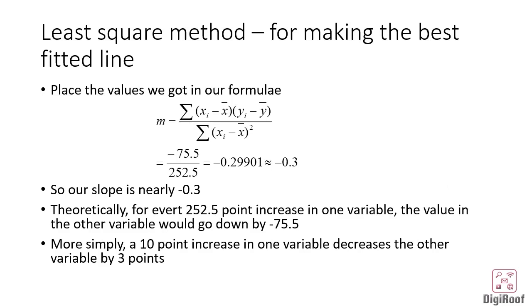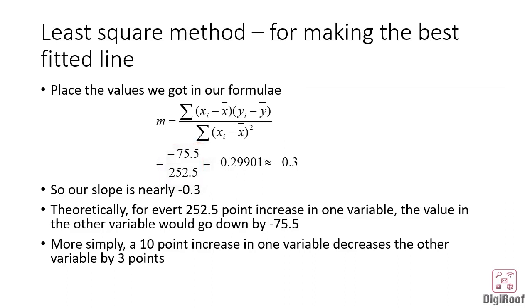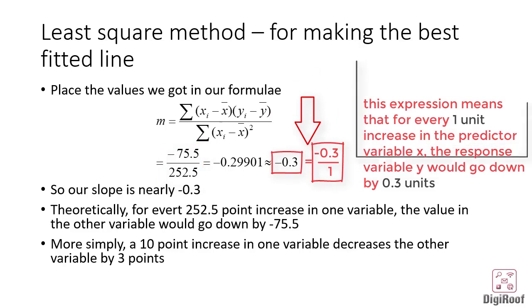If we want to analyze the slope formula using the initial values, we can say that for every 252.5 units increase in the predictor variable, the response variable would go down by minus 75.5 units. On the other hand, if we are saying that the slope is minus 0.3, it means that for every 1 unit increase in the predictor variable, the response variable would go down by minus 0.3 units.